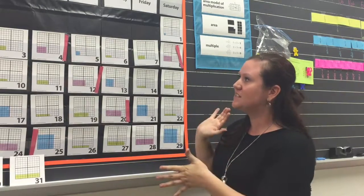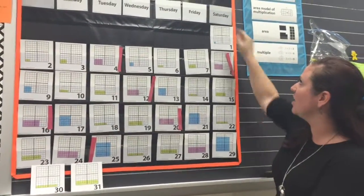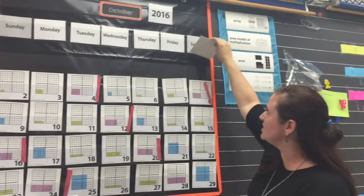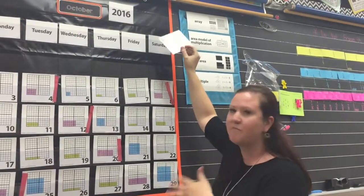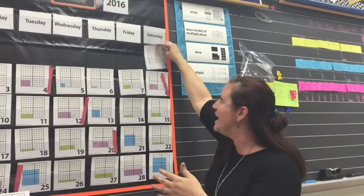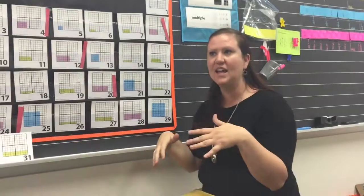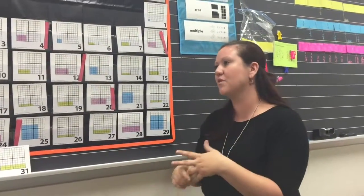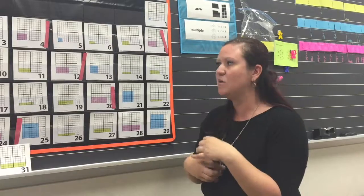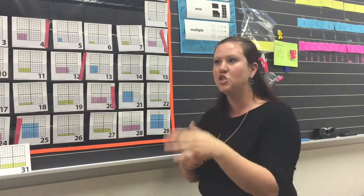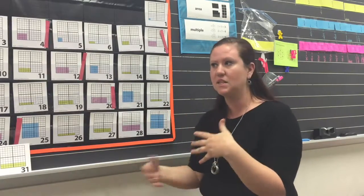So this is our calendar grid observation. There are cards, and they start blank every day, and one of my kids' jobs is to flip it over and they have to figure out the pattern. When we first started off with Number Corner and the calendar grid observation, it was pretty simple — it was shapes, it was geometry — to ease them into the pattern.